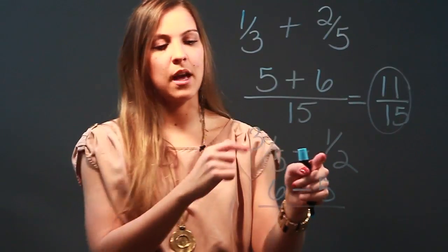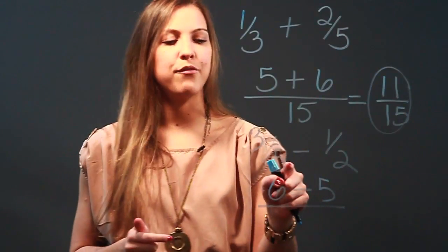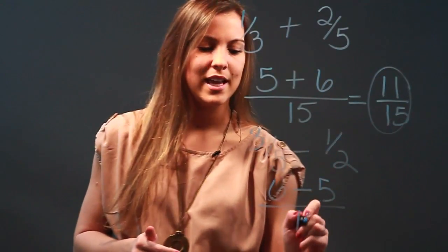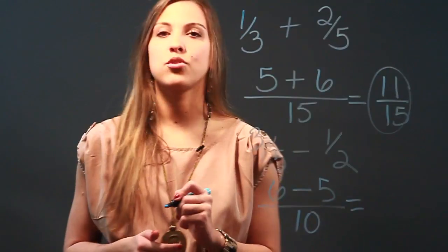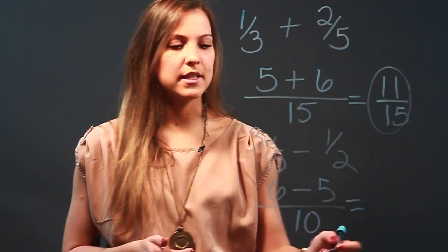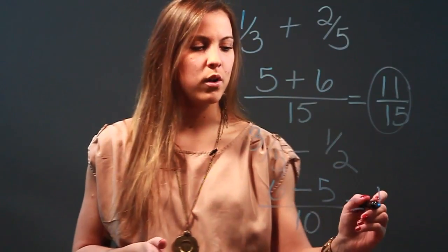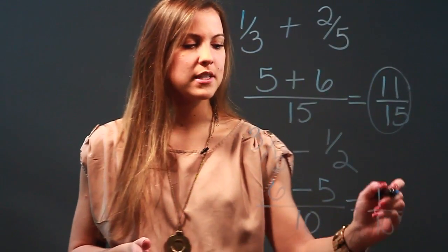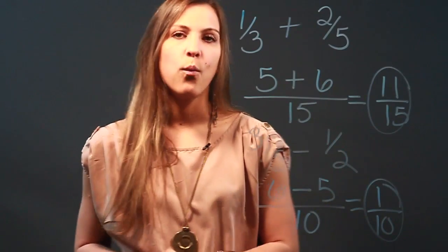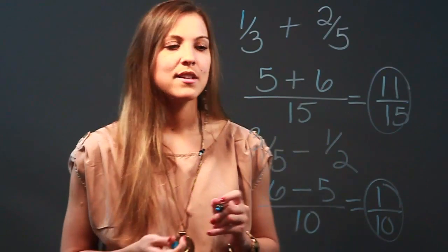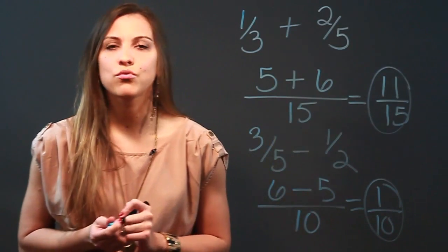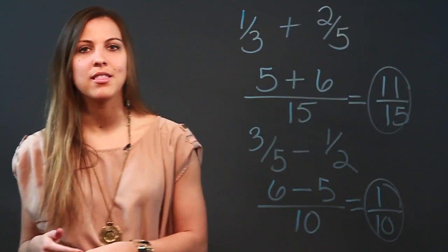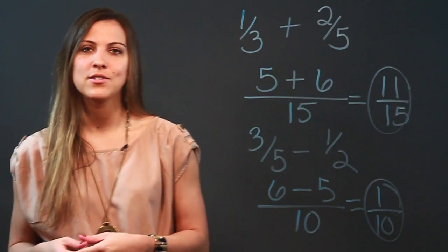Five times one is five. Your denominator, remember, is going to be the product of the two denominators, so five times two is ten. Subtract the numerators: six minus five is one. Keep my denominator, which is ten, so my difference is one over ten. That is how you use cross multiplication to add or subtract fractions with unlike denominators.